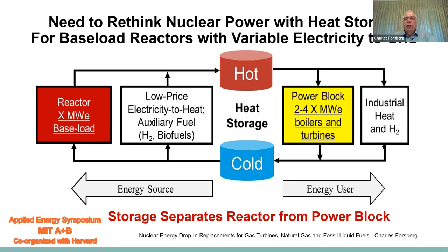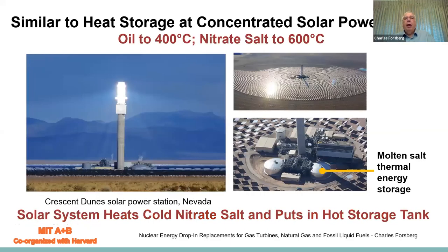In addition, we have the option of taking cold fluid and heating it up to high temperatures and putting it into the hot storage tank using electricity when prices are low. This strategy is similar to heat storage at concentrated solar plants. One such solar power tower shows the power block with hot and cold nitrate storage tanks — the same basic system.